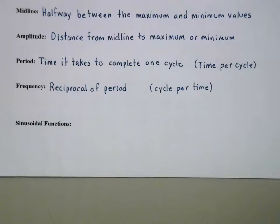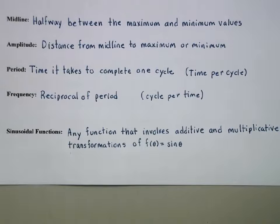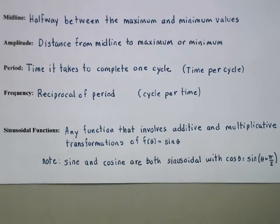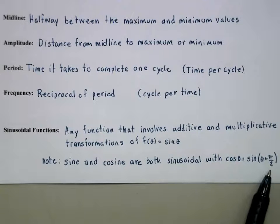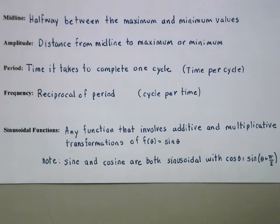Our last definition for this lesson is, what is a sinusoidal function? So the definition is, any function that involves additive and multiplicative transformations of f of θ equals sine of θ. Now the definition kind of seems to leave out cosine, but both sine and cosine are sinusoidal, because cosine is an additive transformation of sine. We can apply a horizontal shift, and then cosine will be cosine, or cosine will be sine.